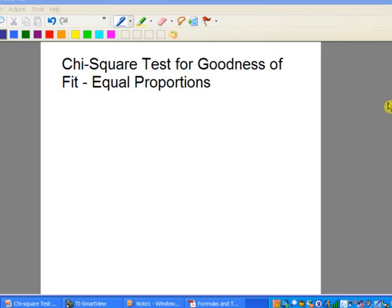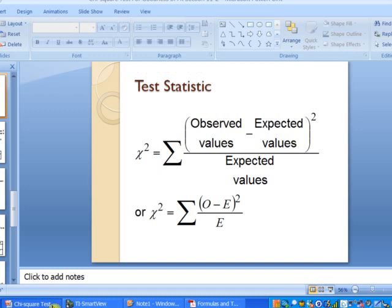In other words, we assume that the frequencies for each class are distributed equally. This works much like the hypothesis tests we've done in the past, where we write a hypothesis, we establish a critical value. And one thing that's different, certainly, is the test statistic.